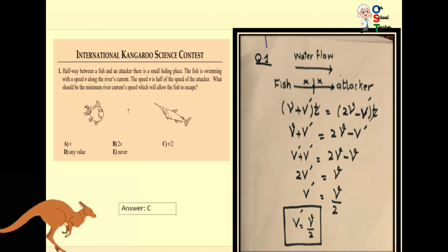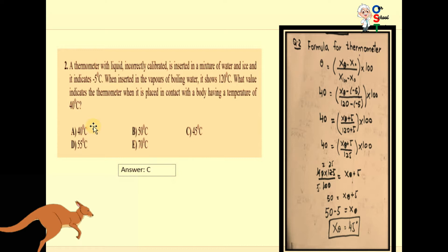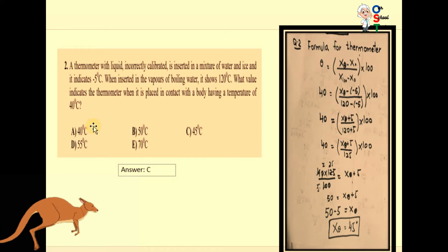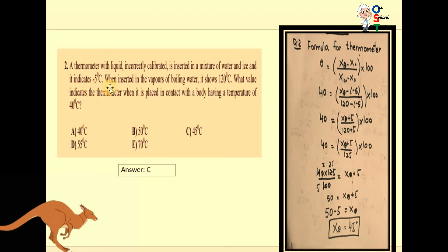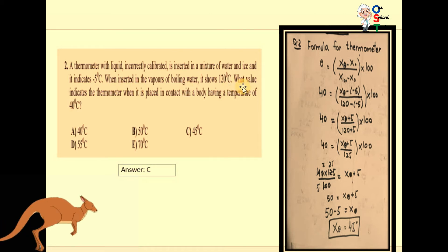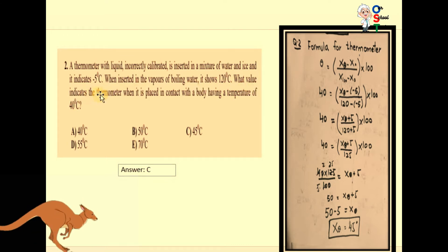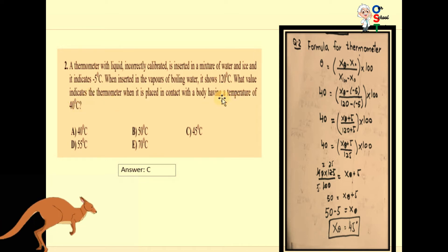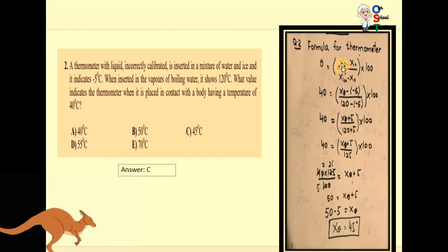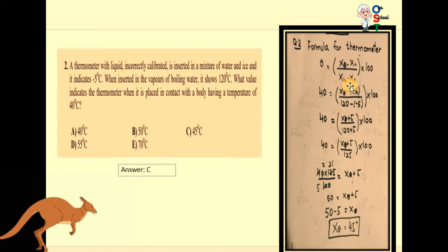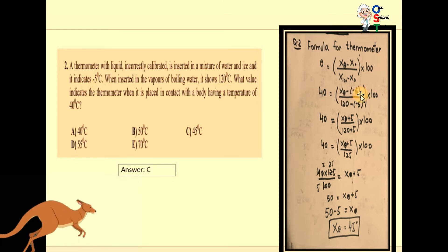Question number two: a thermometer with liquid is incorrectly calibrated. When inserted in a mixture of water and ice it indicates minus 5 degrees centigrade, and when inserted in the vapor of boiling water it shows 120 degrees centigrade. What value does the thermometer indicate when placed in contact with a body having a temperature of 40 degrees centigrade? The formula is: theta equals (X-theta minus X-naught) times 100 divided by (X-100 minus X-naught).